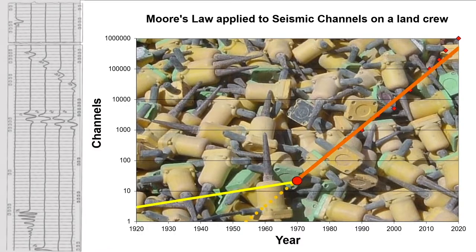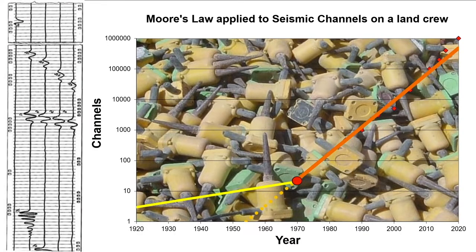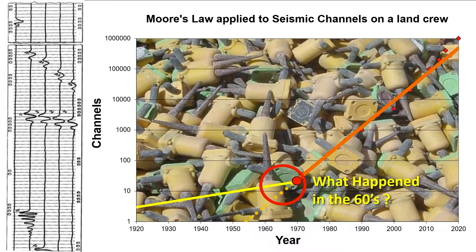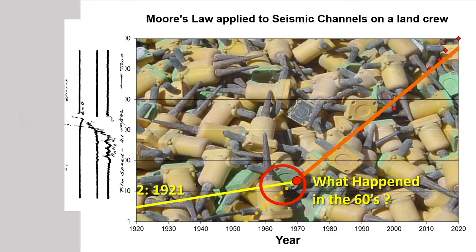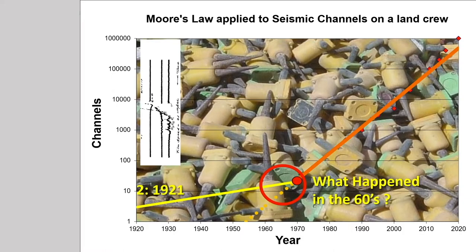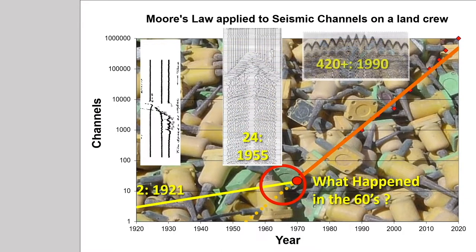So what happened in the 1960s? This was the dawn of the digital age. Up until then, all recording, regardless of how it was done, had been analogue. The change to digital recording fundamentally changed what was possible. Channel counts went from 2 to around 24 in the 1950s, to hundreds, then thousands, and then tens of thousands.